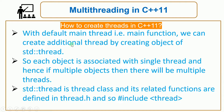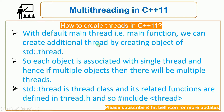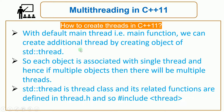In C or C++, execution always starts from the main function, and this main function itself runs as the default main thread. In C++11, by the multi-threading feature, in addition to this default main thread you can create more threads. How? By creating objects of std::thread.